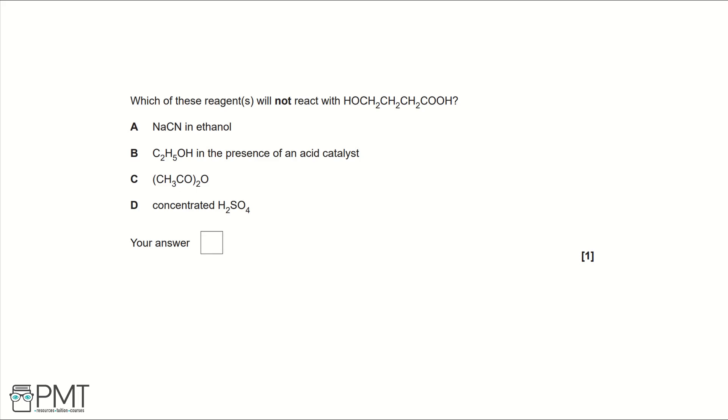For this question we're looking at the reagents that won't react with our compound. Looking at the functional groups first, we have an alcohol and a carboxylic acid. We're looking at reagents that would react with an alcohol or a carboxylic acid; we can eliminate them.